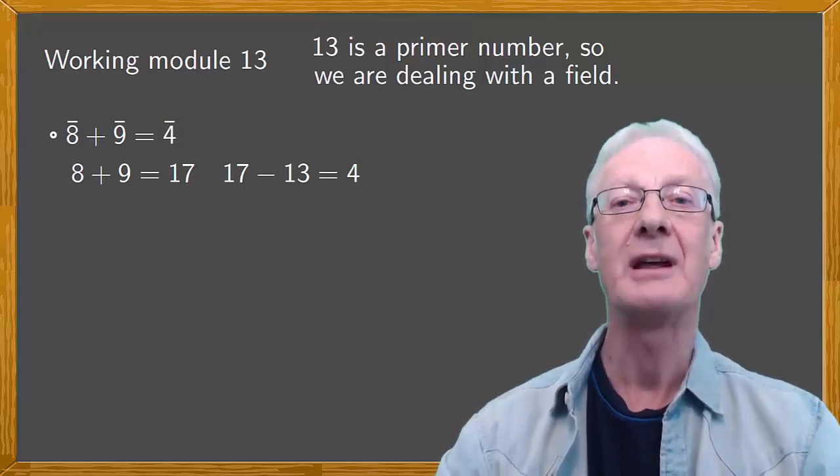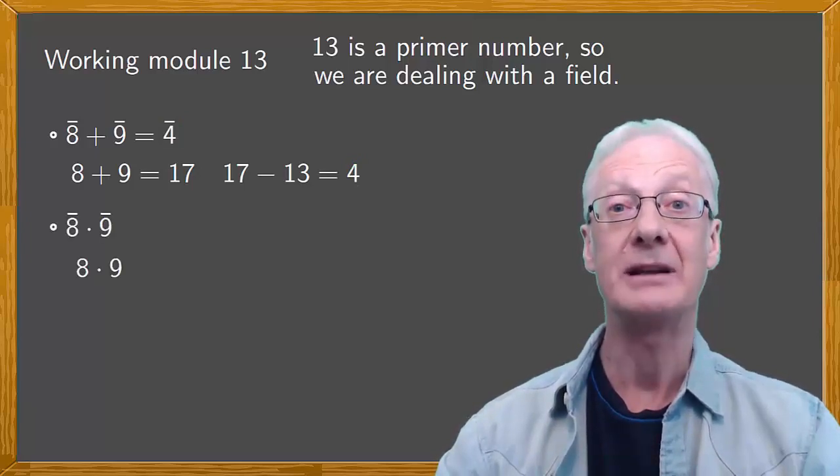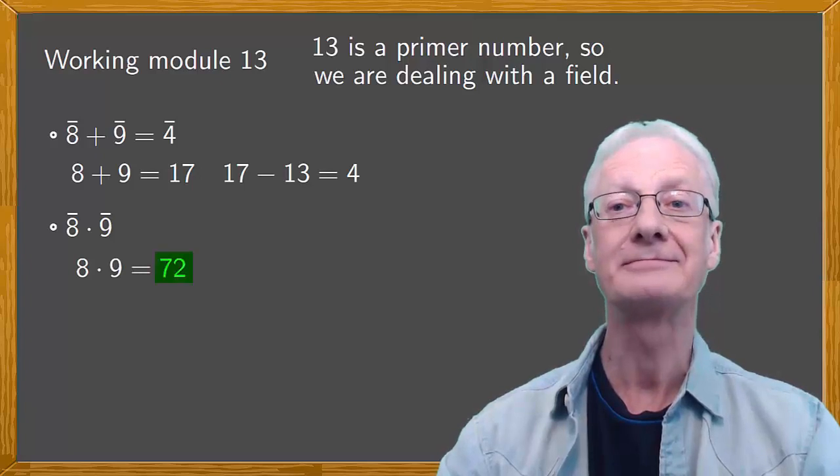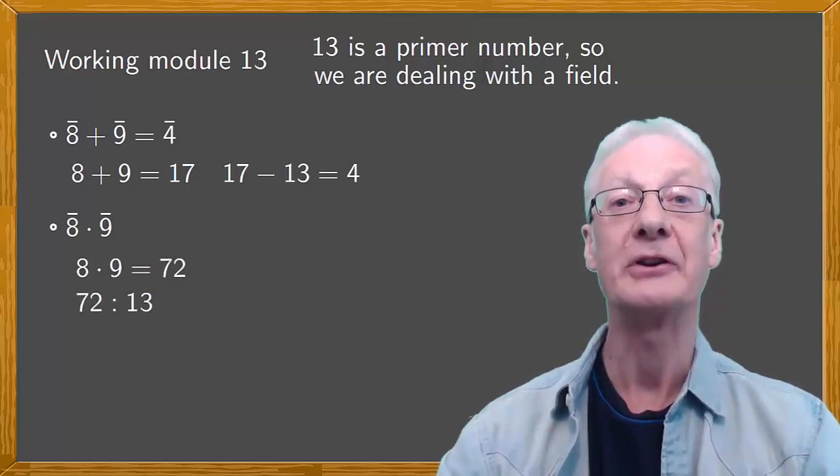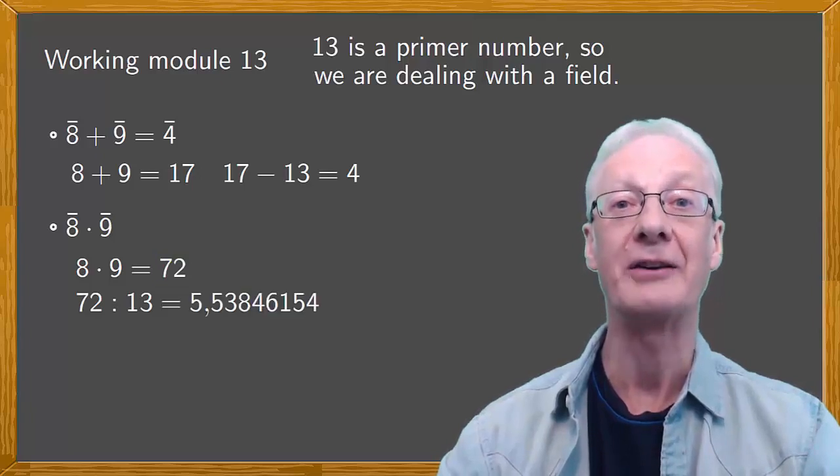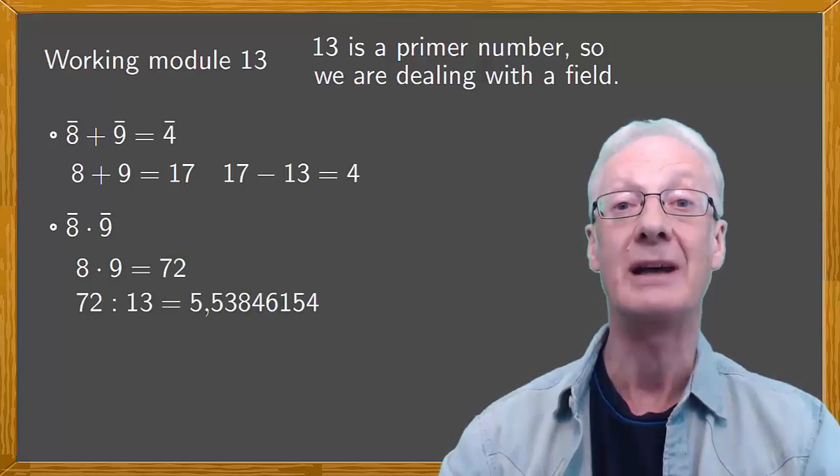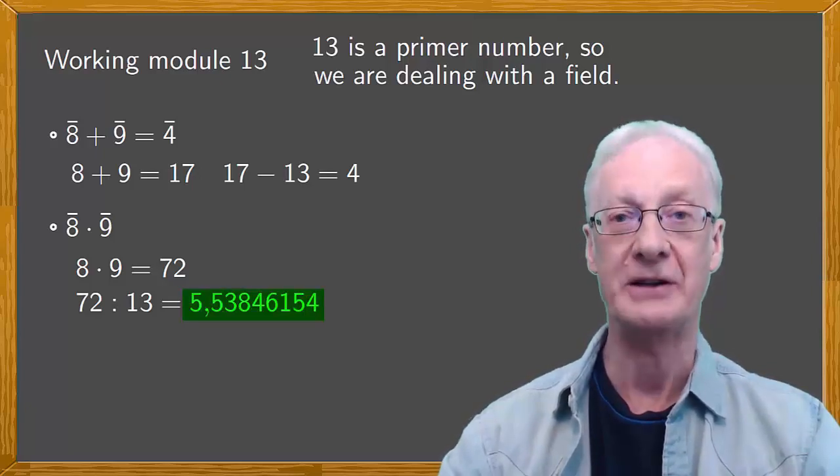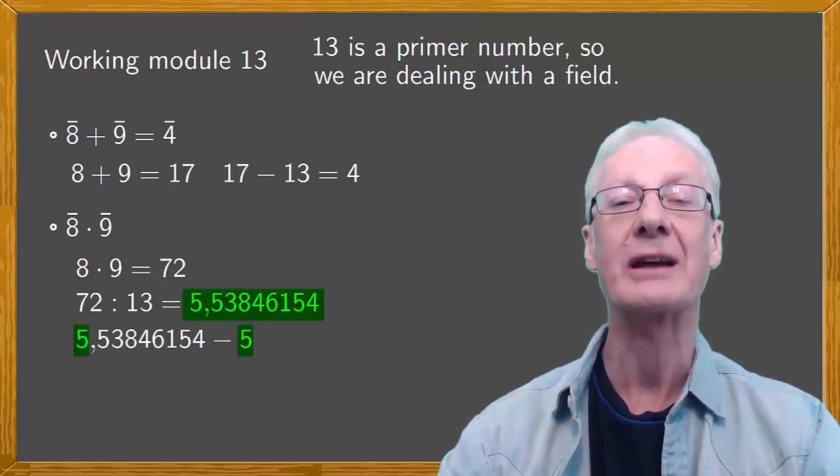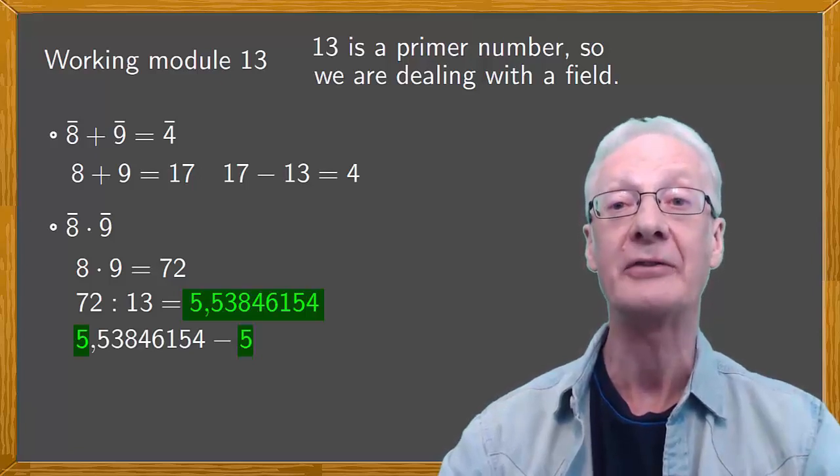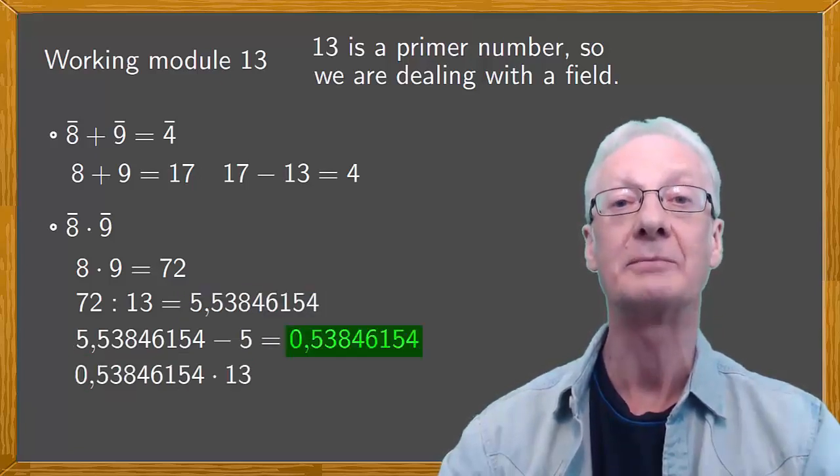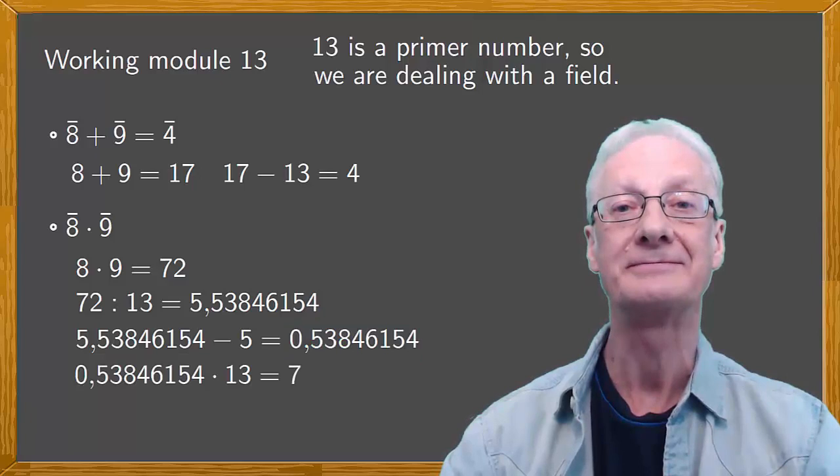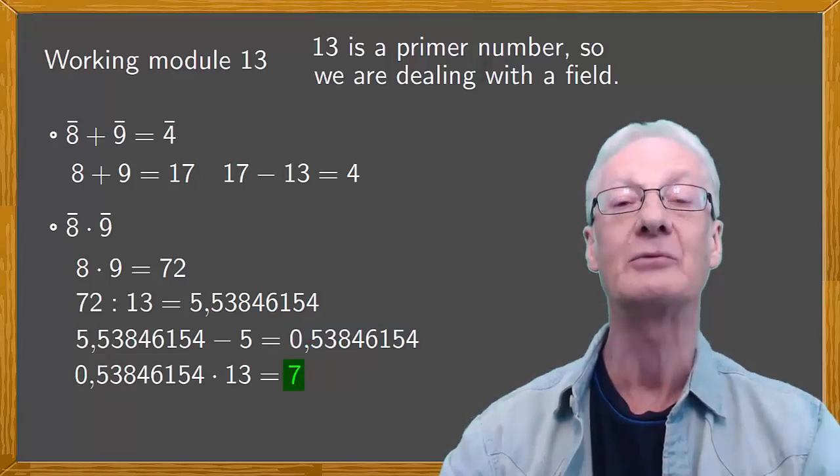Now, moving on to multiplication. 8 times 9 is 72. Next, we divide by 13. Using a calculator gives 5.53846154 and so on. And here's the trick to finishing off. We subtract the integer part, 5, and multiply by 13, to get the final result, which is 7.